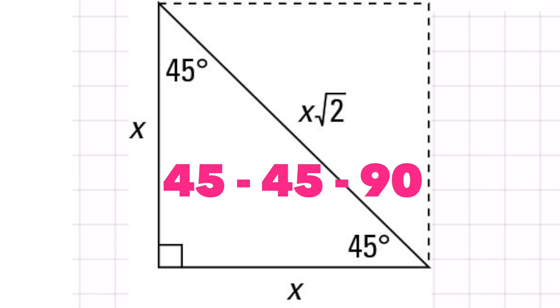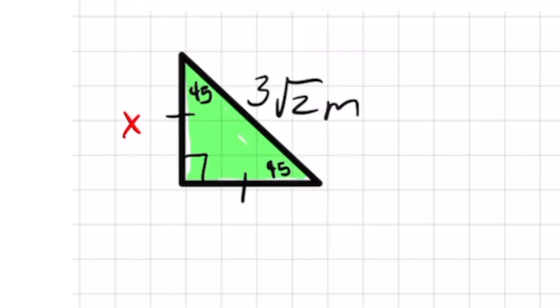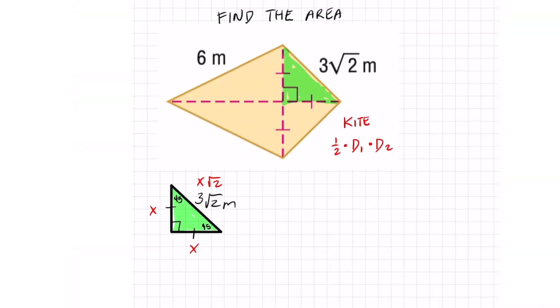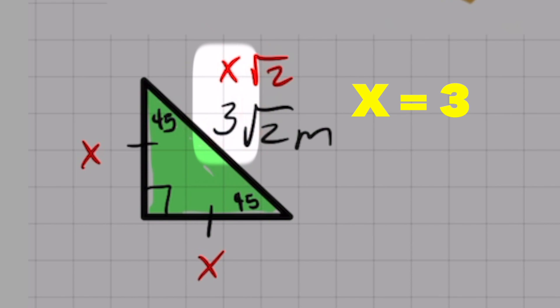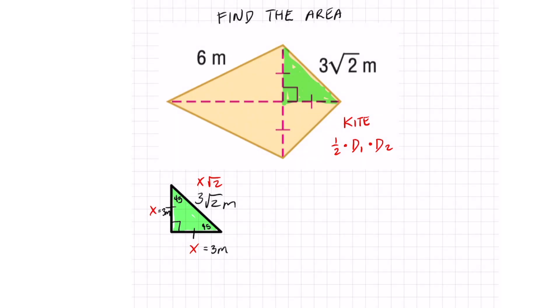And what do you know about a 45-45-90? If we call the legs X and X, because those are the same, then the hypotenuse is X root two. That's the relationship. And luckily this is easy because you can kind of tell what X is. X is going to equal three meters.